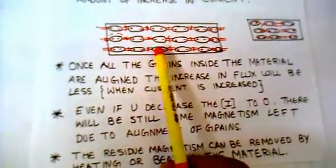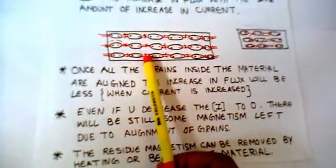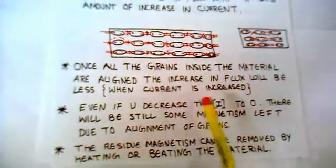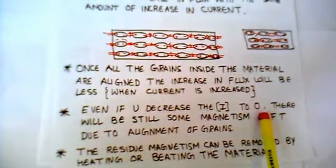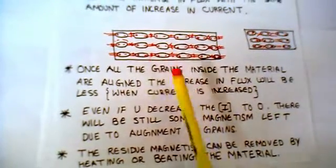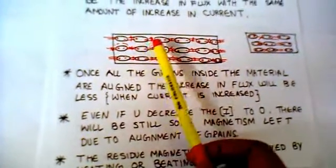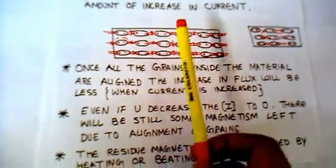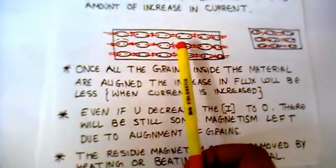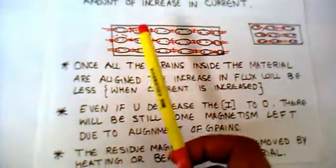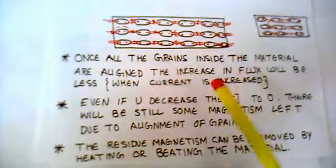The next question that comes in our mind is: if you decrease the current to zero — meaning you have already aligned the grains — and now you are decreasing the current to zero, what will happen?